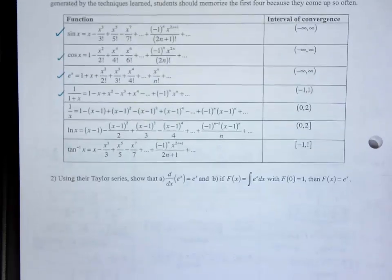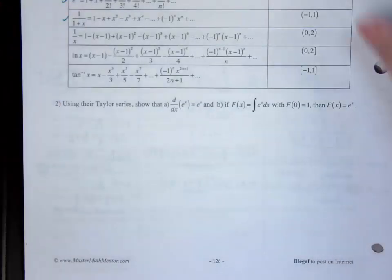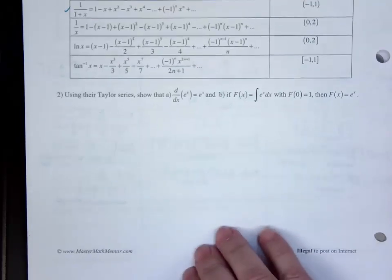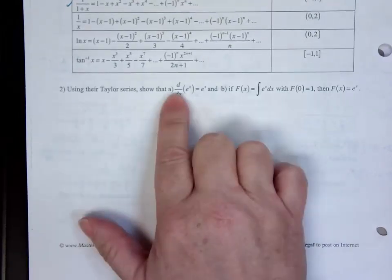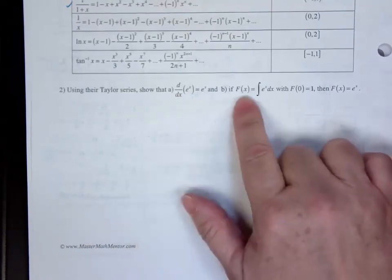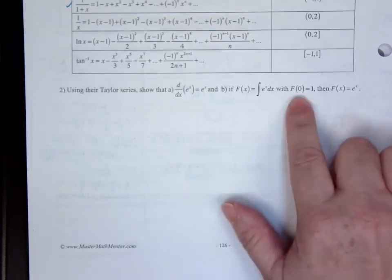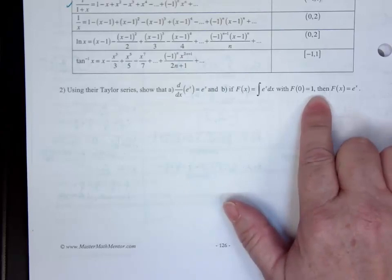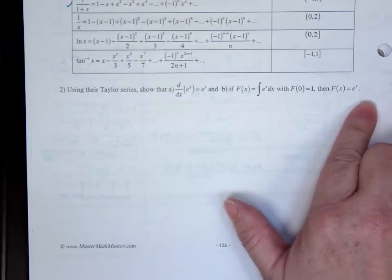We're going to do question number two at the bottom of the first page on the back. This question is a little different — I'm not looking for an answer; I am looking to prove something true. This is something you were asked to do on the AP exam sometimes. It says: using their Taylor series, show that first, the derivative of e to the x is e to the x, and second, if capital F is equal to the antiderivative of e to the x with capital F of 0 equals 1, that capital F is also e to the x.